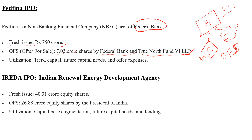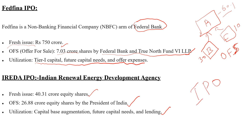Fedfina has come for IPO because they are going to utilize the funds for augmenting own capital, future capital needs, and offer expenses. Next is IREDA — Indian Renewable Energy Development Agency. Their fresh issue is 40.31 crore equity shares, and the offer for sale is 26.88 crore equity shares by the President of India. The President of India is holding shares in IREDA. The utilization will be for capital base augmentation, future capital needs, and lending purposes.